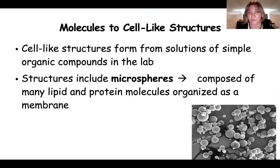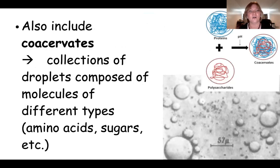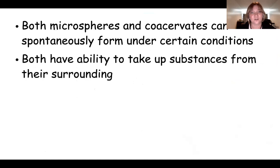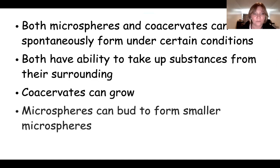You also have structures called coacervates. These are collections of droplets composed of molecules of different types, like amino acids and sugars. Both microspheres and coacervates can spontaneously form under certain conditions, and both of these structures have the ability to take up substances from their surrounding. Coacervates can even grow, and microspheres can bud to form smaller microspheres. These are all pieces of evidence to start to put together the story of how life started on Earth.